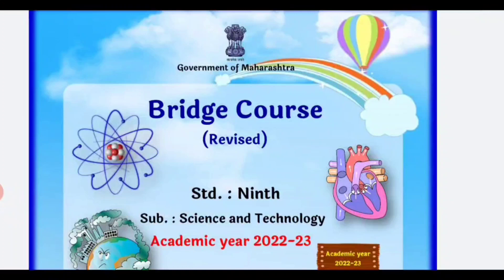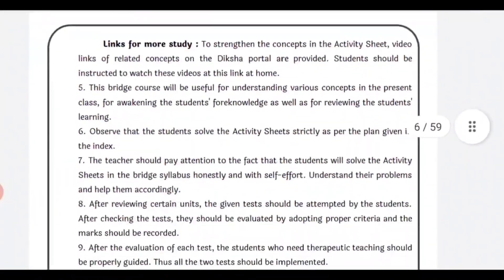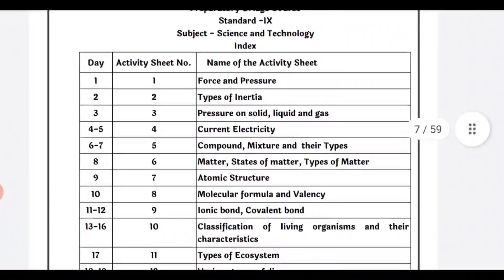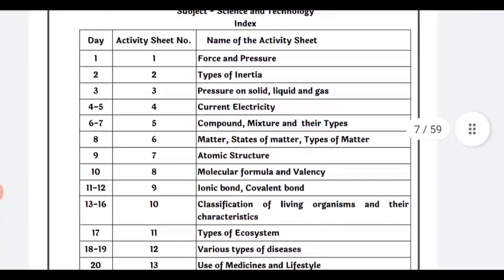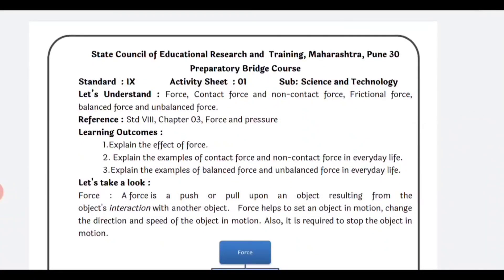This bridge course I will be explaining for English medium as well as semi-English medium students, so I will use both Marathi and English languages while explaining. One activity per day. Let us see the syllabus given for the full one month — different topics are there. We will go on activity sheet number one: State Council of Educational Research and Training, Maharashtra Pune. Preparatory bridge course, activity sheet number one, subject science and technology, standard ninth.